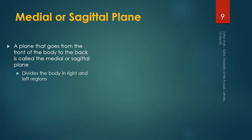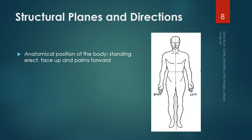In order to understand the structure of the human body, we need some reference. We have three reference planes called structural planes, and based on these reference planes we can understand the organization and structure of the human body. To understand the structure using these three planes, we also need a reference posture, which is called the anatomical position. The body is standing erect.